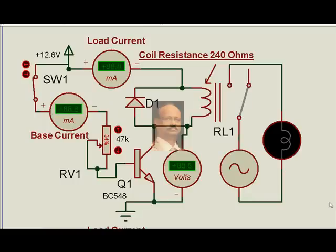Hi, let's try to understand here as to how a relay, electromagnetic relay, is driven by various means so as to achieve its function. This relay has a coil resistance of 240 ohms. We have deliberately collected some meters, some ammeters and some voltmeters to see its function as far as the functioning of this particular transistor is concerned.